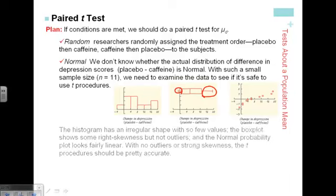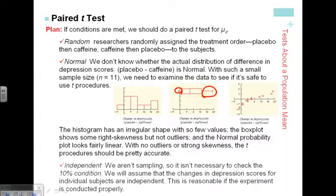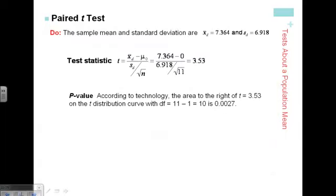Looking at the calculation: the t-value is 3.5. When we get t-values bigger than 3, we tend to have significant results. The p-value ends up being 0.0027 — three times in a thousand. That probability is pretty low. We conclude that we reject the null hypothesis: we have evidence that depriving caffeine-dependent subjects of caffeine causes increased depression.